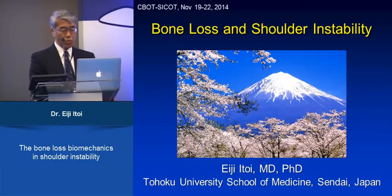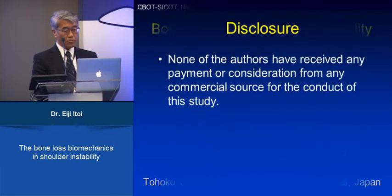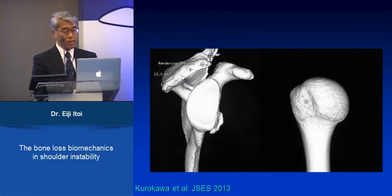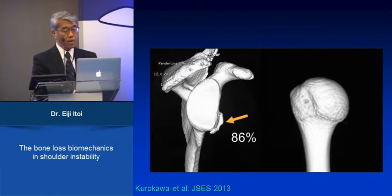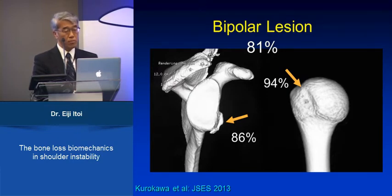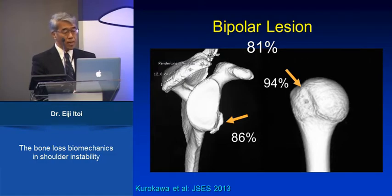The first talk this morning is about bone loss and shoulder instability. Patients with anterior instability oftentimes have a bony lesion of the glenoid and the Hill-Sax lesion. In our series, 86% had a glenoid bony defect and 94% had a Hill-Sax lesion. In total, 81% had both lesions together — we call it a bipolar lesion. So four out of five patients with anterior instability have a bipolar lesion, and we have to deal with them properly.